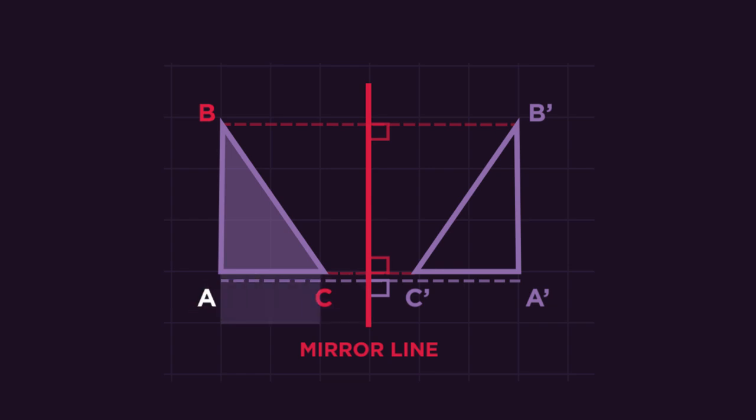So point A is three squares away, so the reflected point must also be three squares away. Point B is also three squares away, so then count another three squares from the reflected point. And point C is just one square away, so only one square.